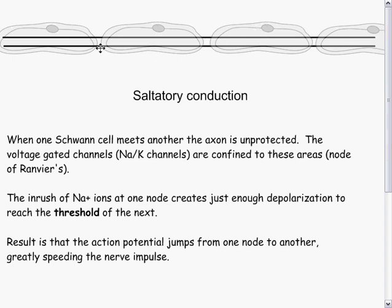The inrush of sodium ions that happens at one node then creates just enough depolarization at the next node to reach the threshold, allowing it to depolarize. That depolarization in turn causes just enough depolarization to reach the threshold of the node just beyond it. The intervening areas do not have sodium and potassium channels open — they don't depolarize.